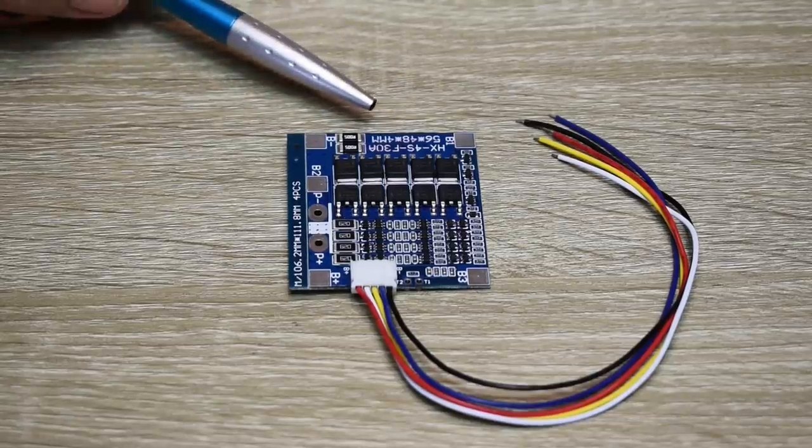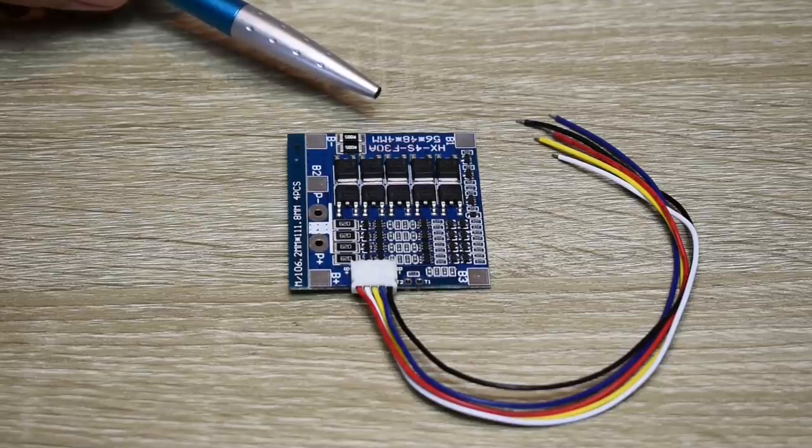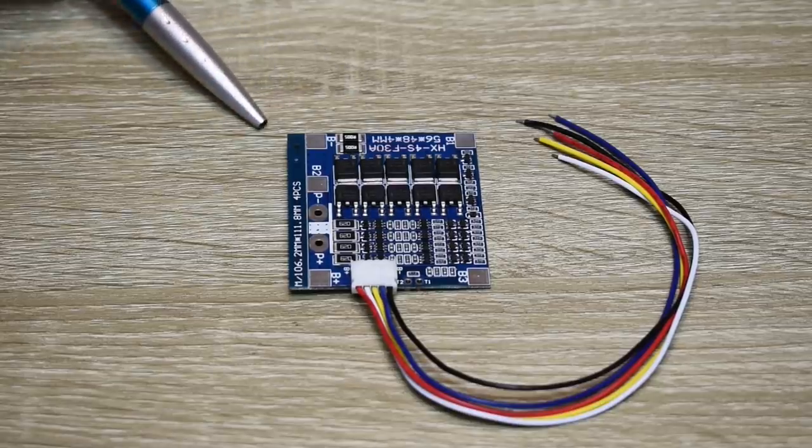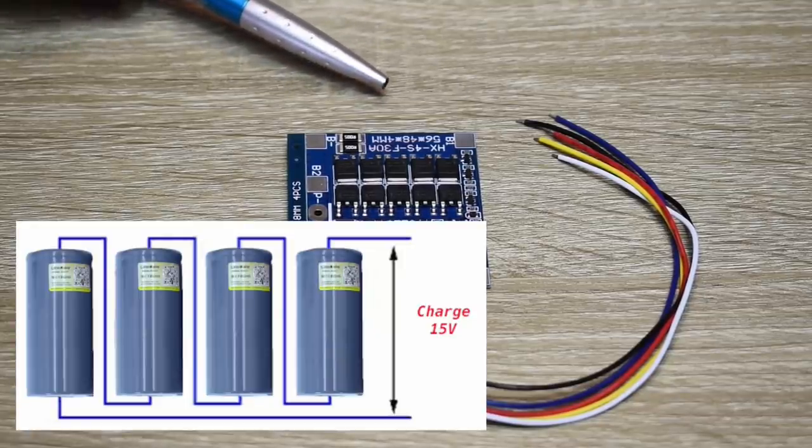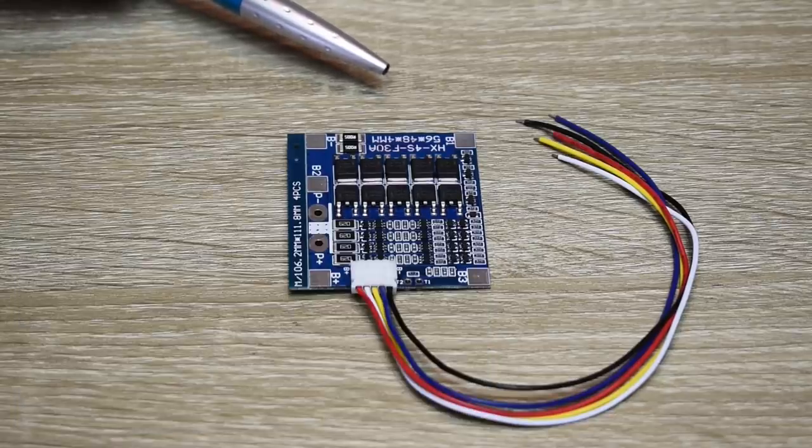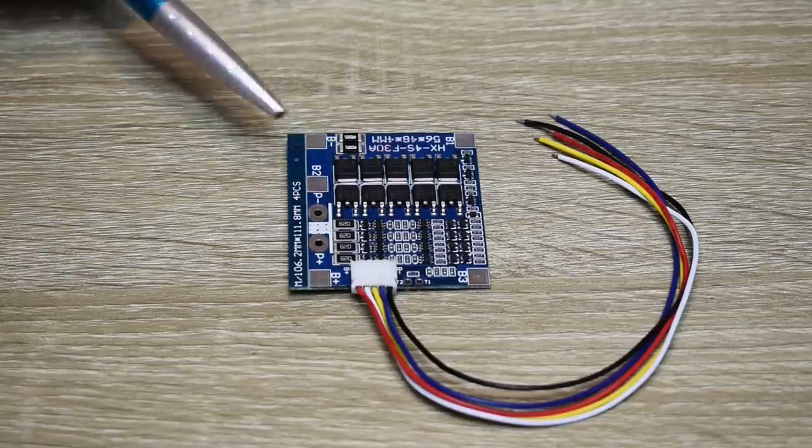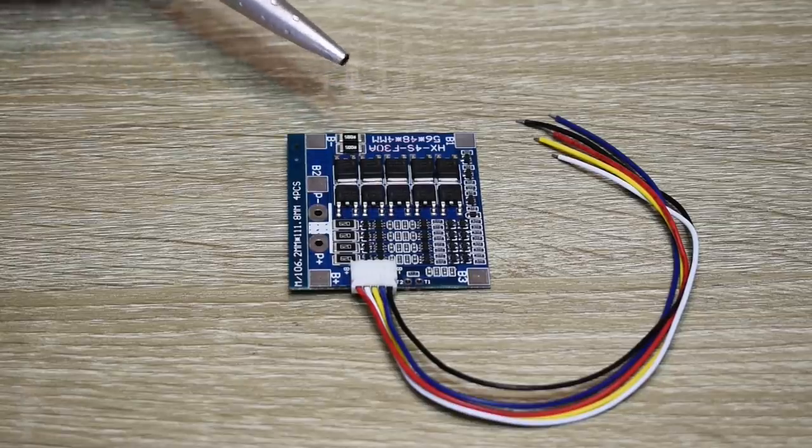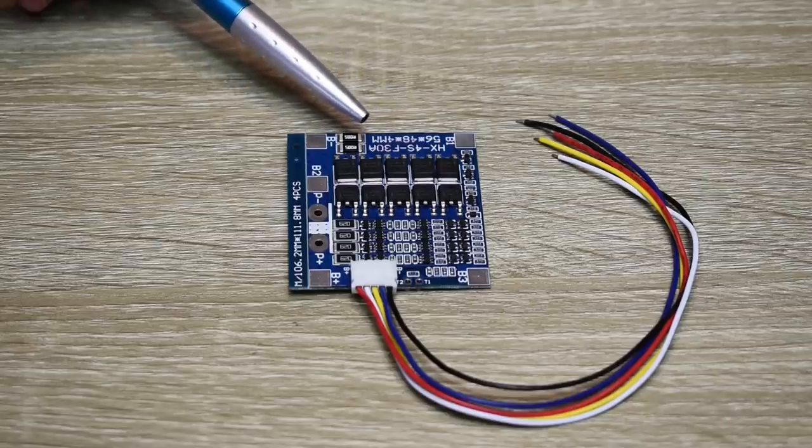The purpose of this board is to ensure that each one of the cells when they're connected in series that they're charged equally. You do not want to have one cell charging more than the other. And if you just take all four cells and connect them from end to end and apply 15 volts across all the cells, what's going to end up happening, because the internal resistance for each one of the cells can vary, you can end up with one cell being overcharged and another cell being undercharged. So this is going to make sure that each one of the cells that are connected in series are charged properly. This board is also going to make sure you do not over discharge the cells to damage them, and it's also going to protect against excessive current discharge.